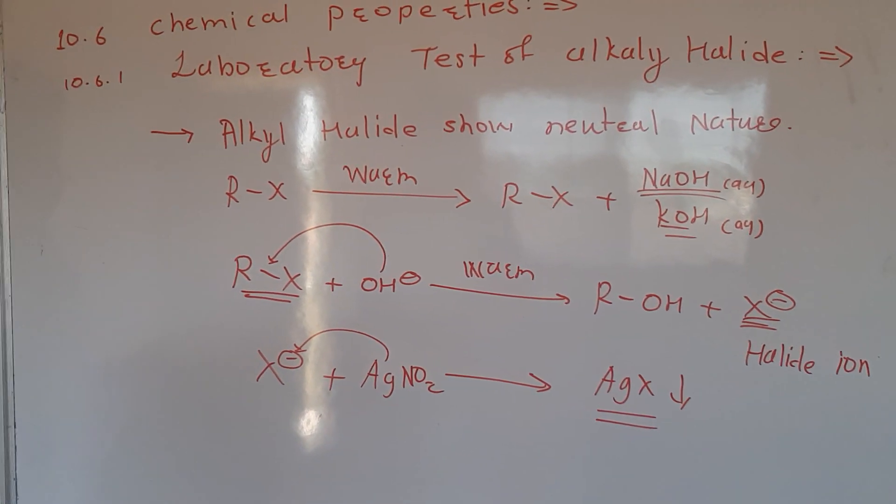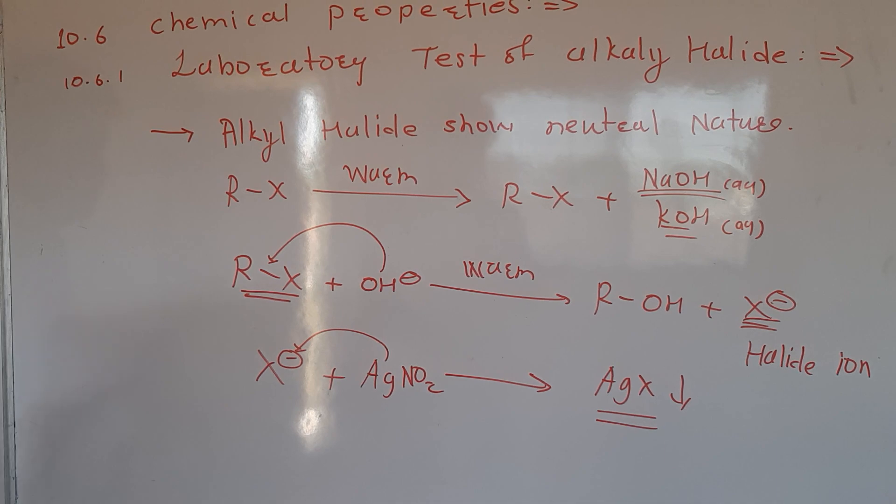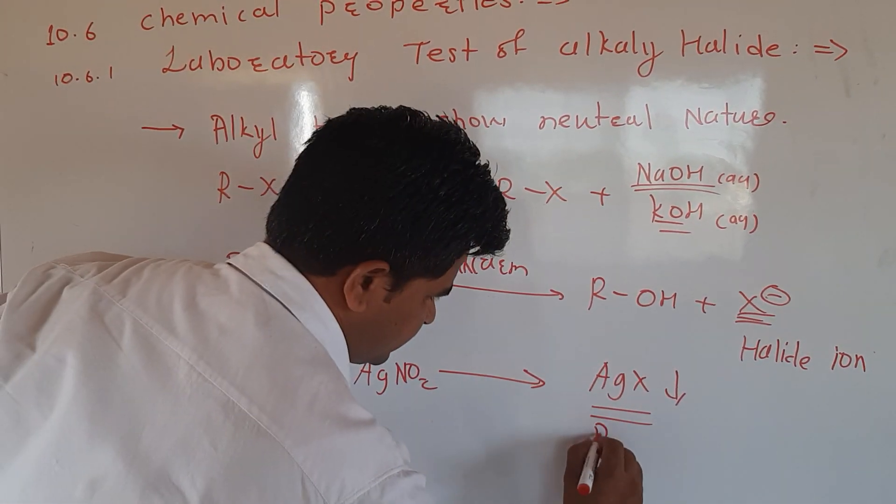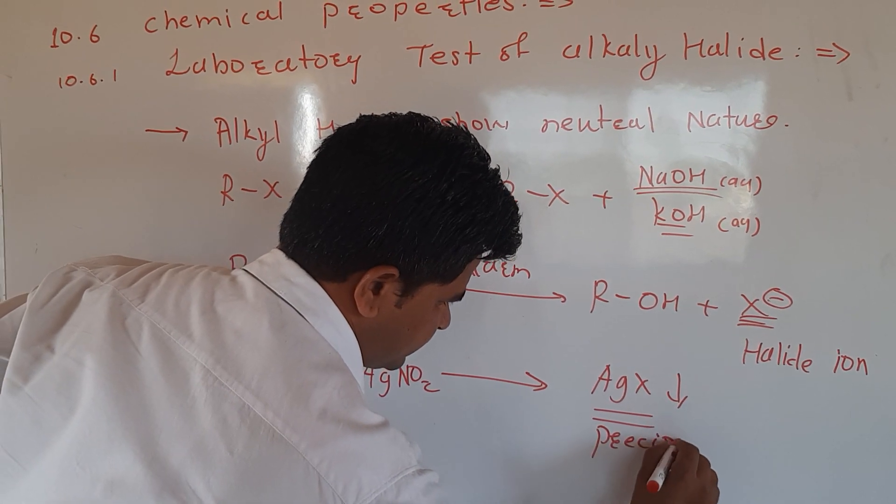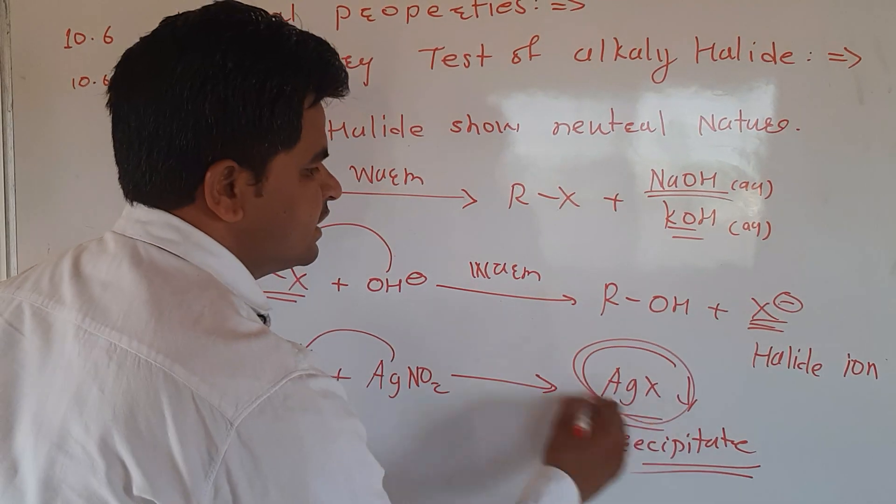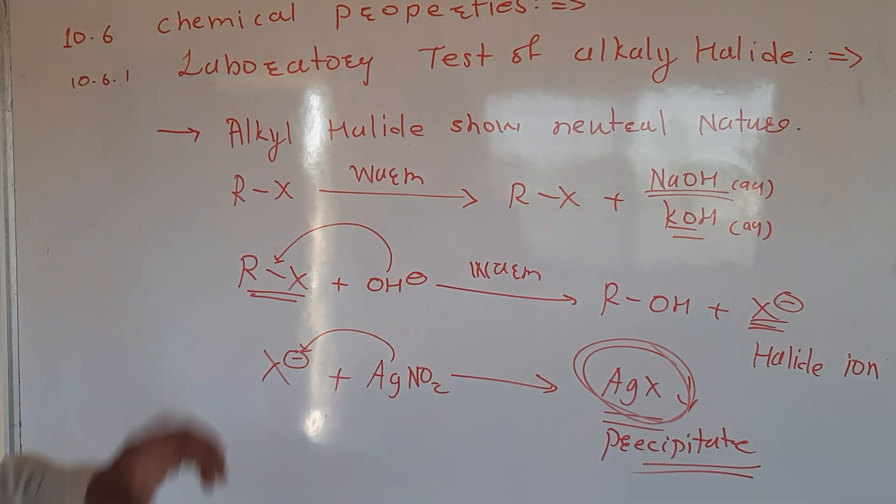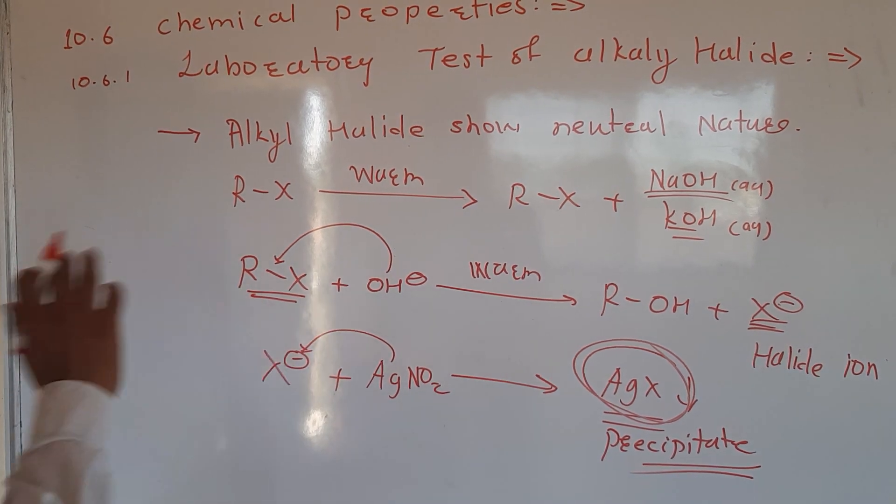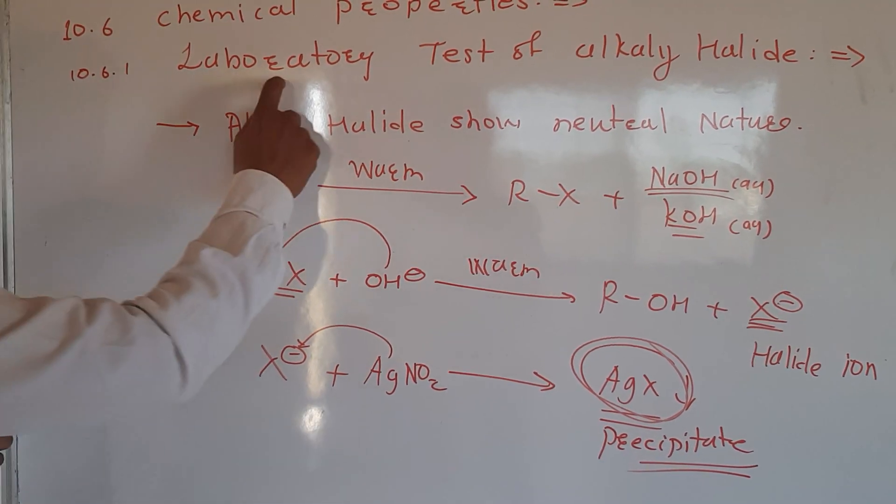In the organic compound, the halide ion is present. This X-ion will form precipitate. And the precipitate, this will be silver halide precipitate.